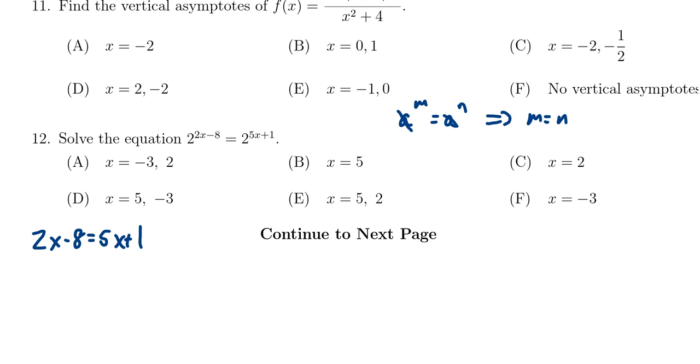Solving this equation I'm going to subtract 2x from both sides, I'm going to subtract 1 from both sides. We end up with on the left hand side negative 8 minus 1 is negative 9, on the right hand side 5x minus 2x is 3x. So we divide both sides by 3 and we end up with x being equal to negative 3.